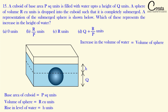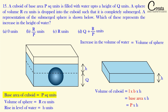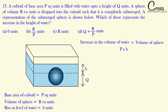The increase in the level of the water will be in the form of a cuboid. The base area is p square units and the height is h. The volume of a cuboid is length × breadth × height, and length × breadth is the area of the base, which is p. So the volume of the increased water = p × h. Setting this equal to the volume of the sphere: p × h = r.